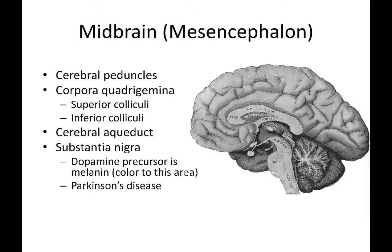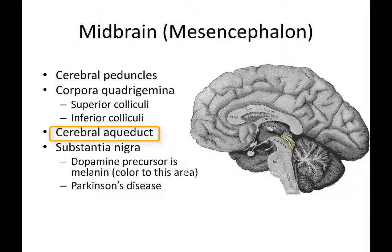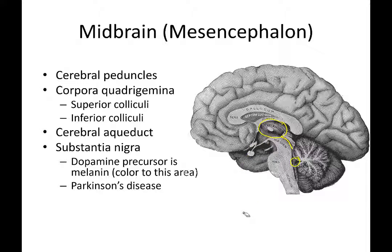The cerebral aqueduct is a little tunnel located in the midbrain. It connects the third ventricle with the fourth ventricle, allowing cerebrospinal fluid to flow from the third ventricle down into the fourth ventricle.